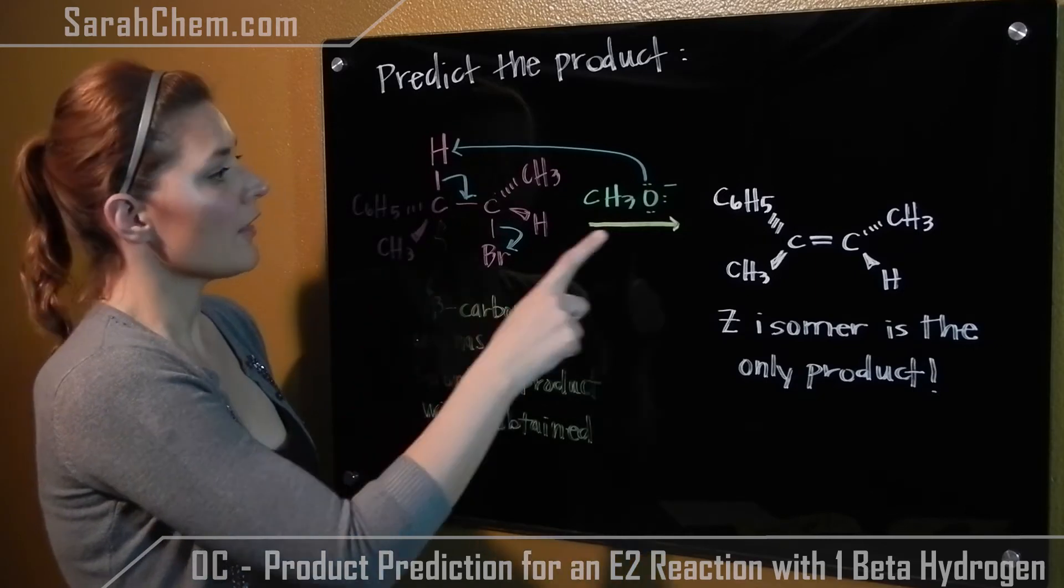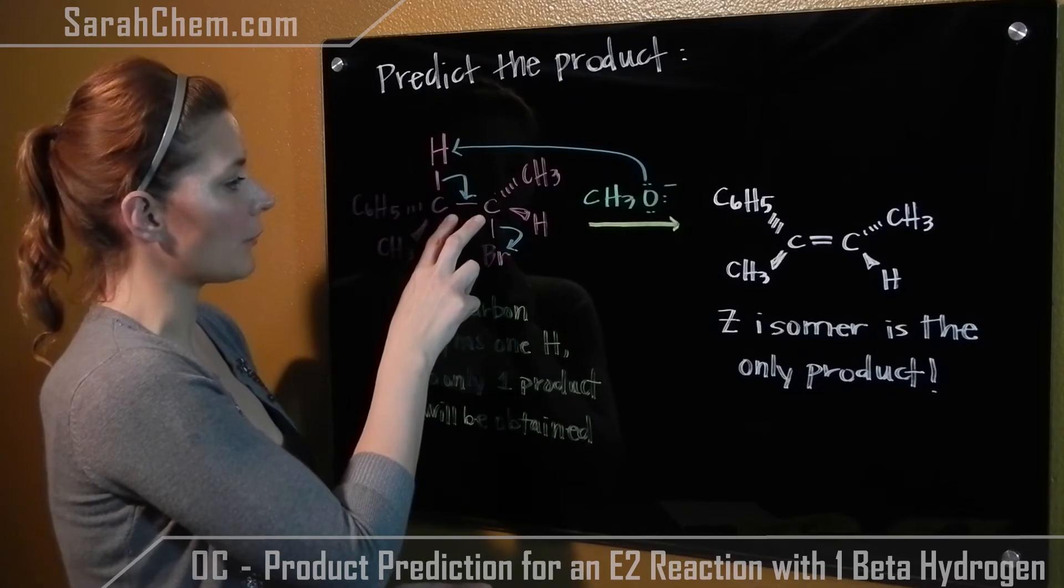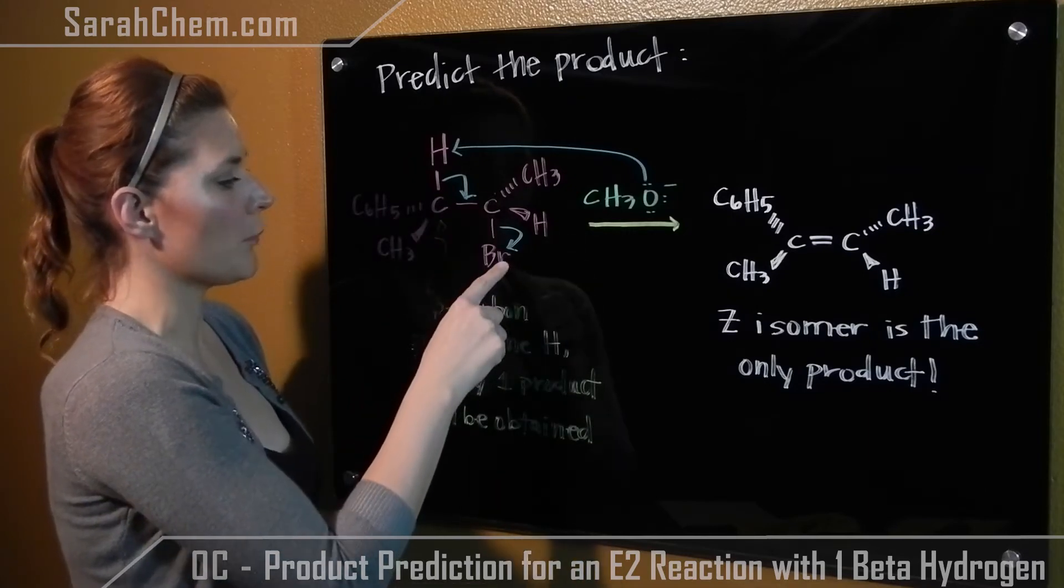So what happens is the base attacks the hydrogen, breaking this bond, forming a double bond here, and at the same time the bromine group is kicked off.